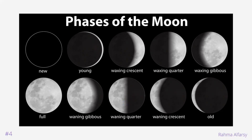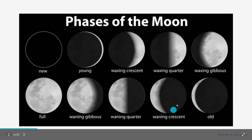When the percent illumination is increasing, like in this first row, we say that the moon is waxing. And when the percent illumination is decreasing, we say that the moon is waning, like in the second row. When the moon is more than 50 percent illuminated, we say that it is a gibbous. And when it is less than 50 percent illuminated, we call it a crescent.